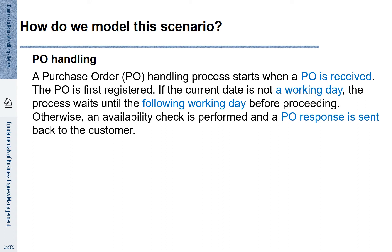The purchase order is first registered. If the current date is not a working day, the process waits until the following workday before proceeding. Otherwise, an availability check is performed and a purchase order response is sent back to the customer. Some parts of the text are highlighted in blue, and the blue text relates to events. But how do we model them in this scenario?